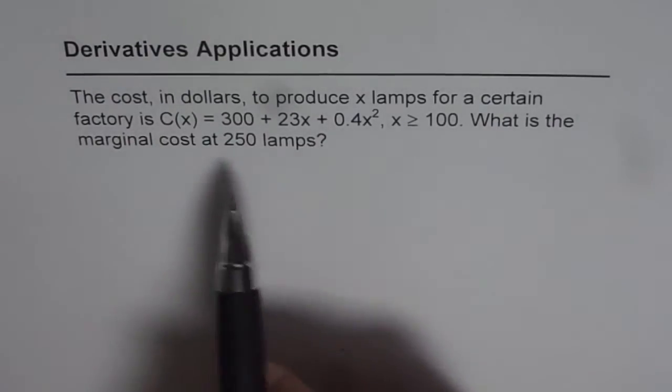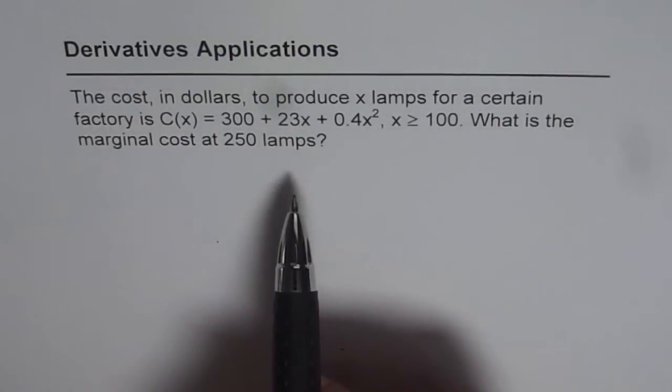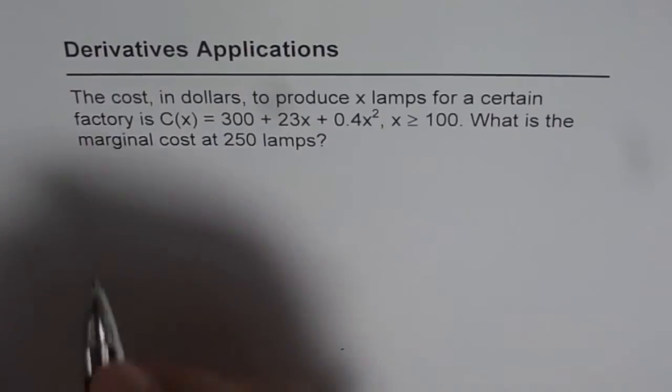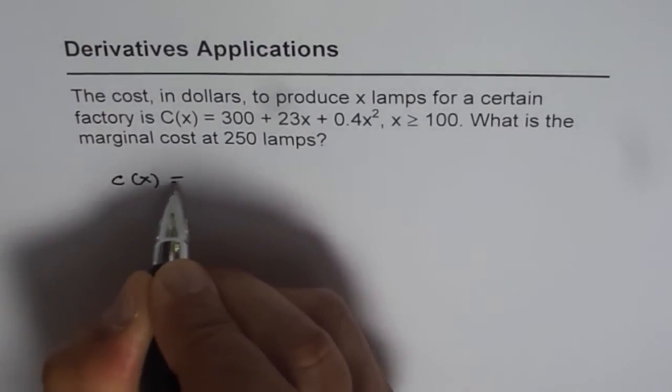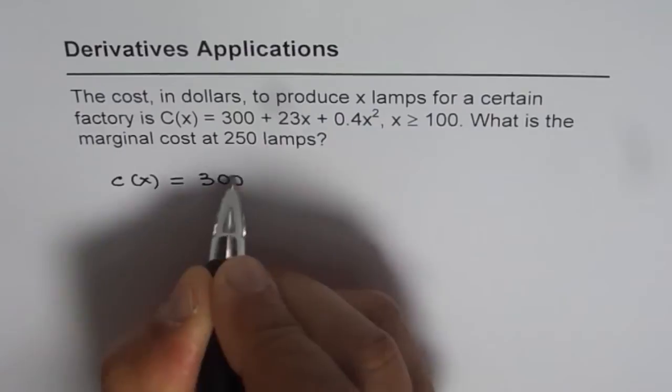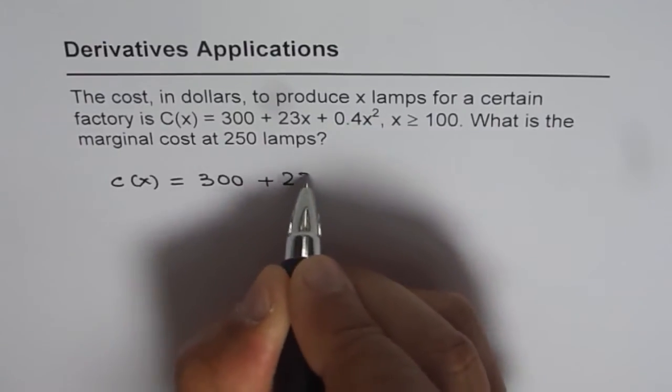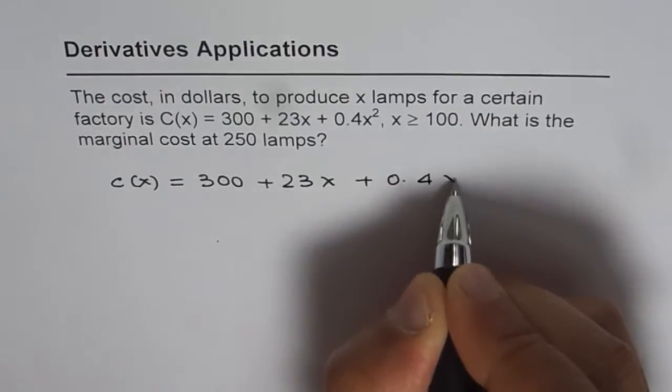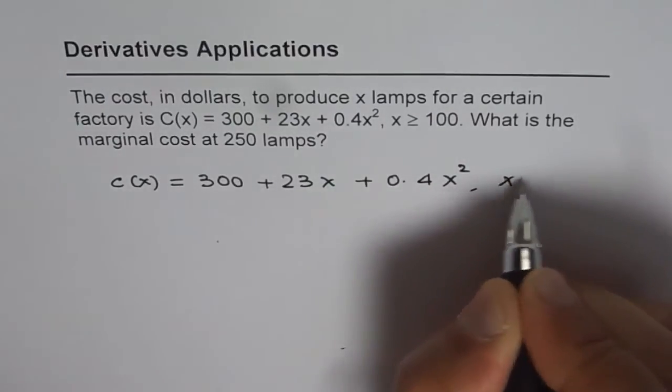To find that we can find the derivative and then find the value of derivative when x is 250. We are given cost function as C(x) = 300 + 23x + 0.4x² where x ≥ 100.